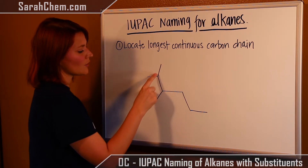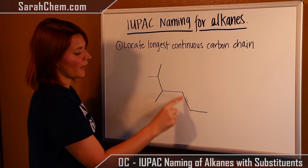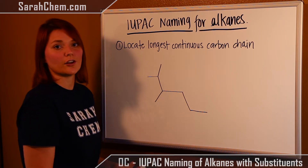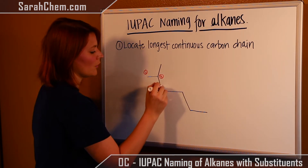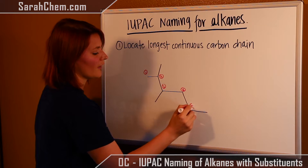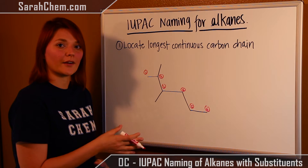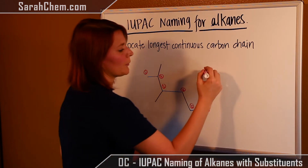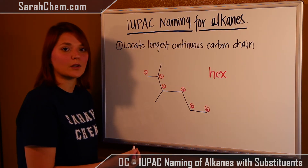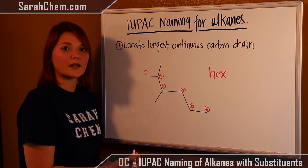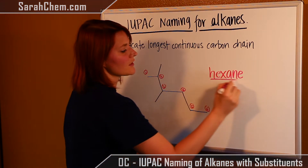Trying from another starting point, we again count 1, 2, 3, 4, 5, 6. Going in either of these equivalent directions gives us 6 carbons, so it doesn't matter which way you choose. We can confirm that our parent chain has 6 carbons. When we have 6 carbons the prefix is 'hex', and since this compound has only single bonds it gets the suffix '-ane'. So the parent chain is called hexane.